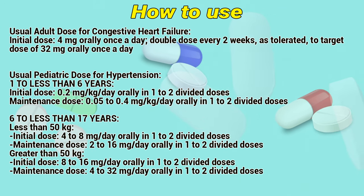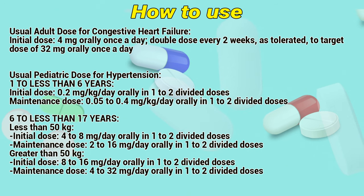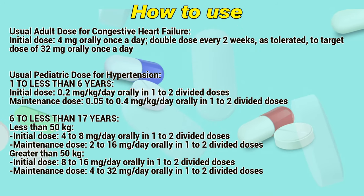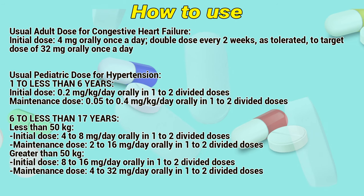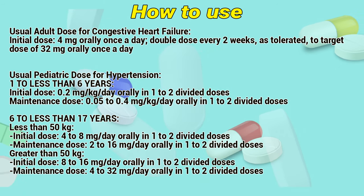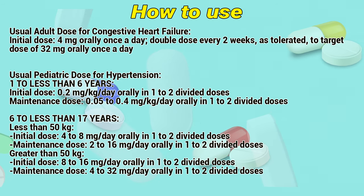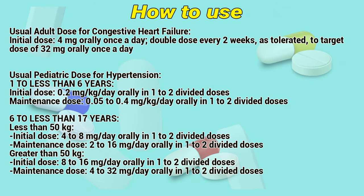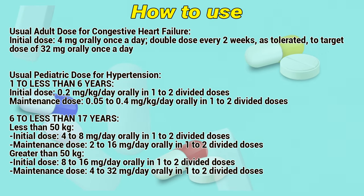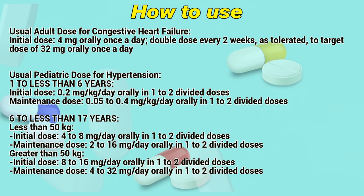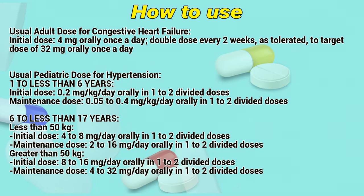Usual pediatric dose for hypertension, 1 to less than 6 years: Initial dose — 0.2 mg per kg per day orally in 1 to 2 divided doses. Maintenance dose — 0.05 to 0.4 mg per kg per day in 1 to 2 divided doses. For 6 to less than 17 years, less than 50 kg: Initial dose — 4 to 8 mg per day in 1 to 2 divided doses. Maintenance dose — 2 to 16 mg per day in 1 to 2 divided doses.